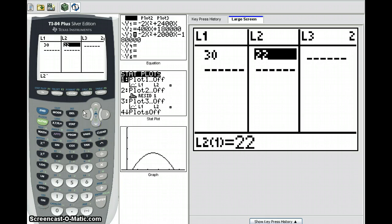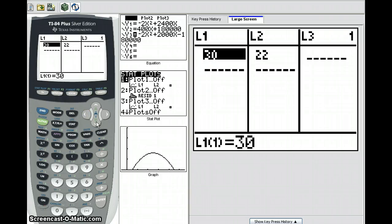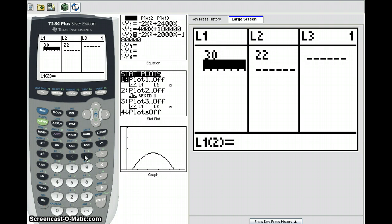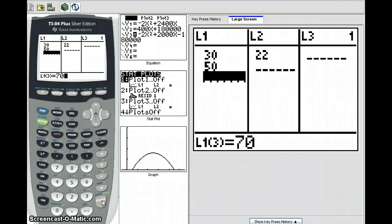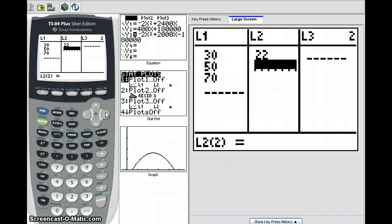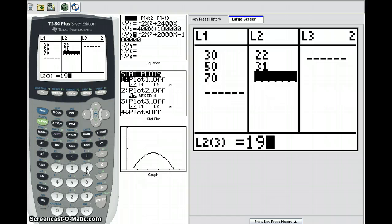We'll continue by entering the speeds into the L1 list, which will be our X values, and the gas mileage into L2. The speeds are 30 miles per hour, 50 miles per hour, and 70 miles per hour. The corresponding gas mileage is 22 miles per gallon, 31 miles per gallon, and 19 miles per gallon. Press Enter.